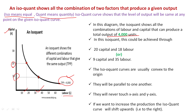The iso-quant curves are usually convex to the origin because capital and labor are inversely proportional — if capital is increased, labor is decreasing, and if labor is increasing, capital is decreasing. Due to this reason, it gives rise to a convex curve sloping downwards from left to right.